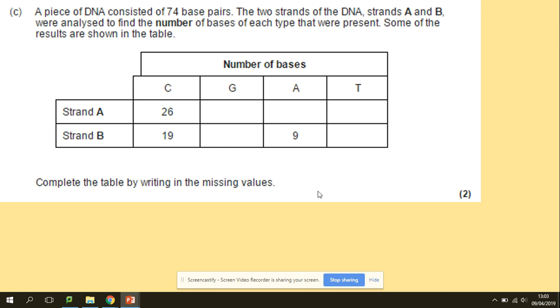Let's have a look at a few questions here. We've got a piece of DNA that has 47 base pairs, and the two strands of DNA, A and B, were analyzed to find the number of bases of each type that were present. Some of the results are shown in the table, and you need to complete that table. So what is your approach? This is strand A, that's strand B.